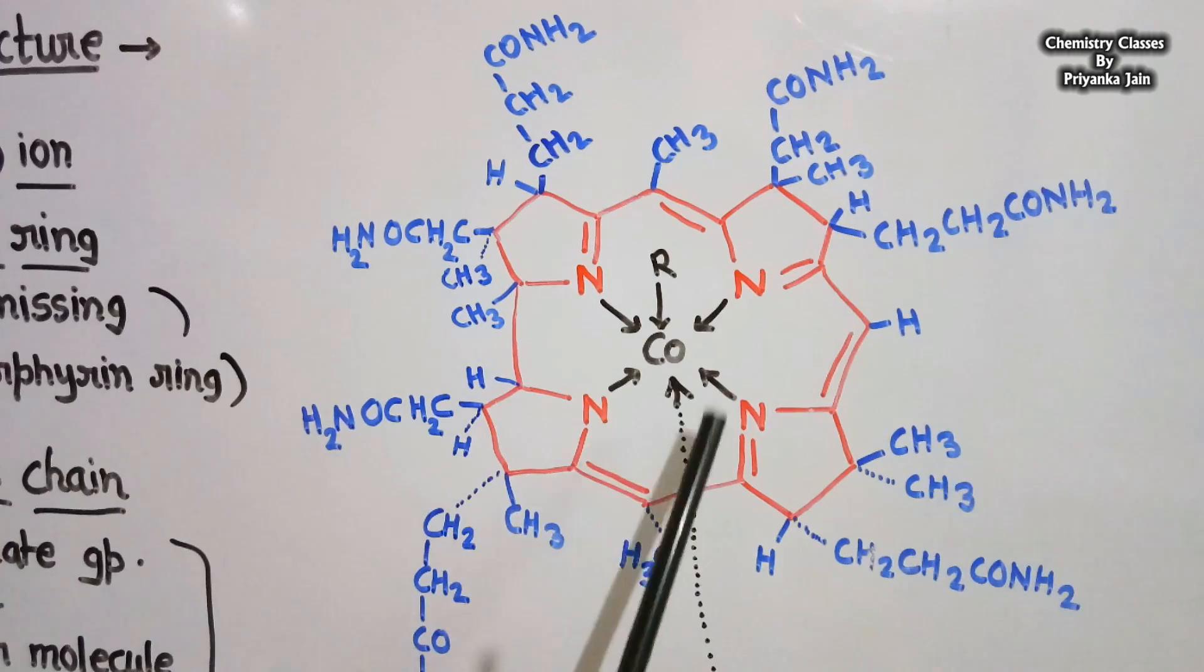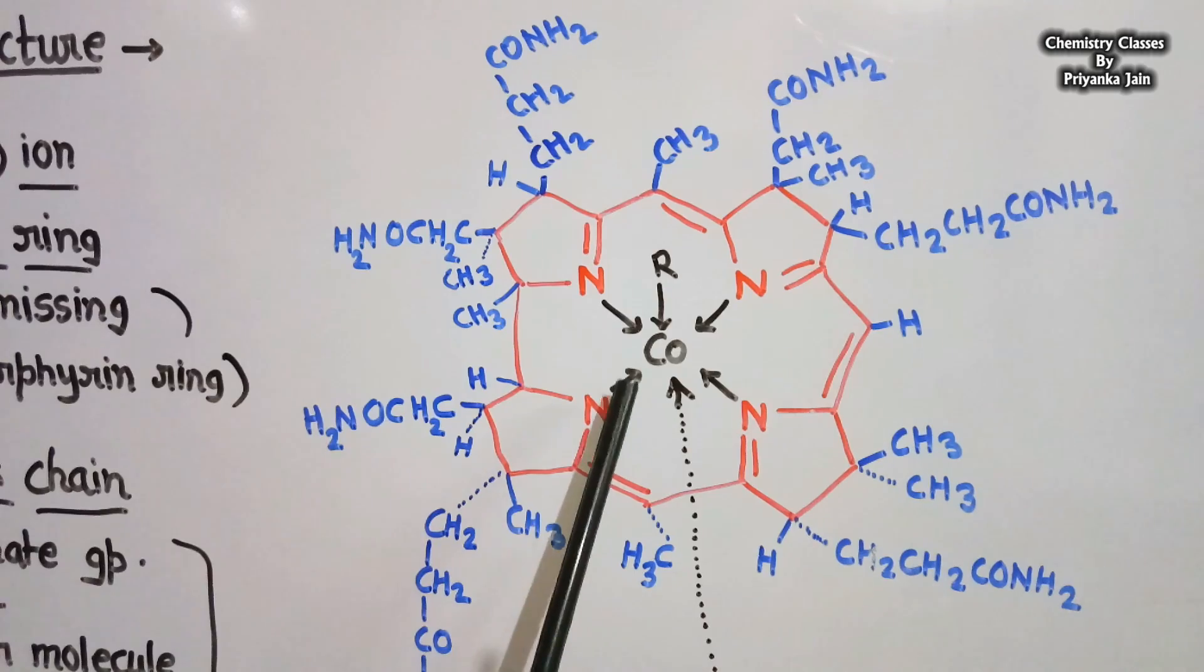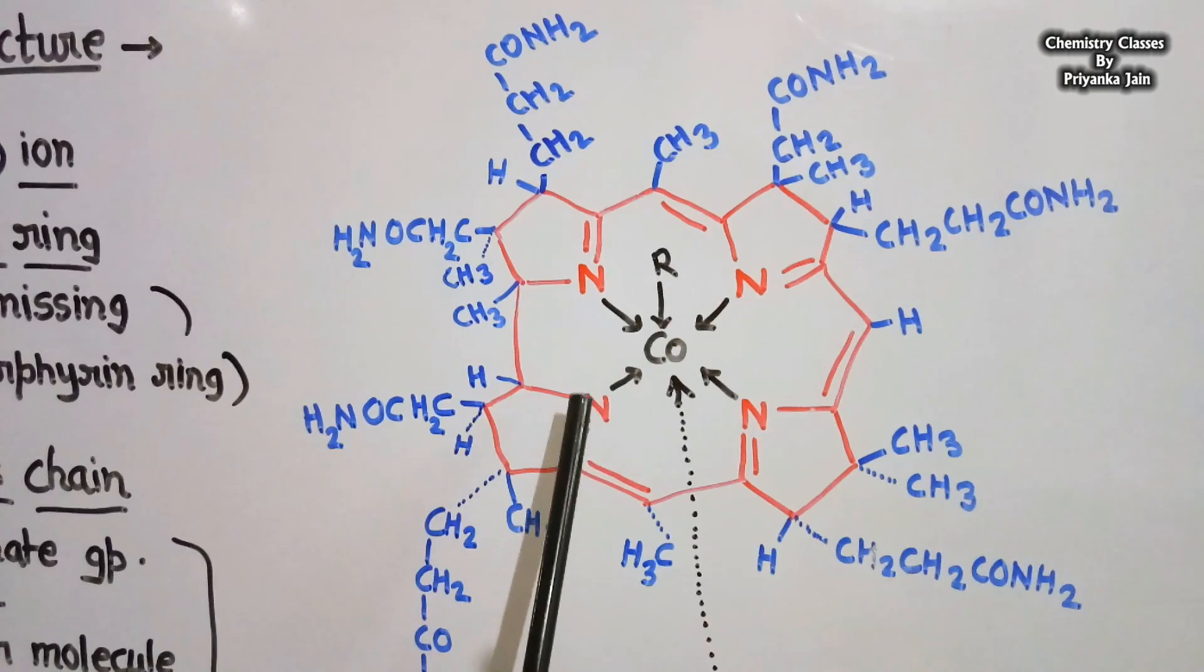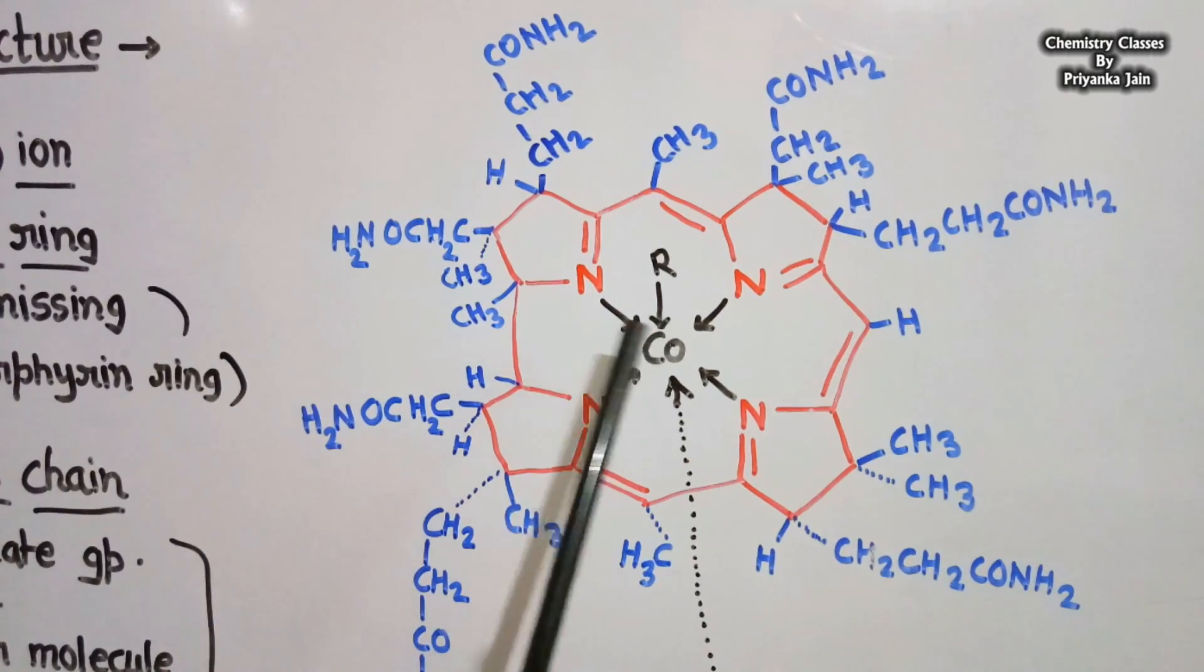There are four pyrrole molecules in this ring, and the nitrogen atoms of the pyrrole rings are coordinated to the cobalt ion. Hence, the four coordination positions are occupied by the four nitrogens of the pyrrole rings.